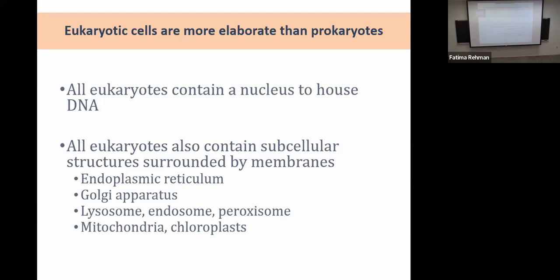Only your specimen is lit up in dark field, and that's what allows you to have a little bit of contrast. Now, what's the difference between light microscopy versus electron microscopy, specifically transmission electron microscopy?